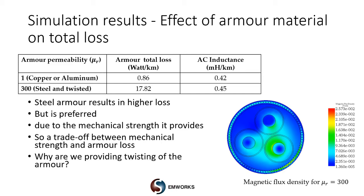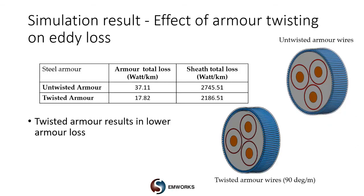Next, let us see the fundamental reason why we use twisted armor. Notice the two figures here — the top right shows untwisted armor, and the bottom shows twisted armor wires. We established that we will use steel for armor wires despite the higher loss because it provides better mechanical strength. Simulation showed what kind of losses occur with untwisted steel versus twisted steel armor. Twisted steel armor results in much lower armor loss, and that is really why we use twisted armor wires to fabricate these cables.